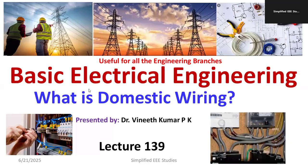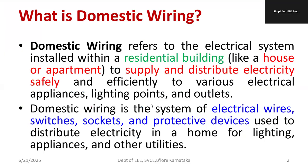Welcome to the lecture series on basic electrical engineering. In this video, I'm going to discuss the meaning of domestic wiring. Domestic wiring refers to an electrical system installed within a residential building — especially houses or apartments — to supply and distribute electricity safely and efficiently to various electrical appliances, lighting points, and outlets. It is applicable for residential buildings such as apartments, houses, and small buildings, ensuring electricity is distributed efficiently and without risk with respect to different types of loads.